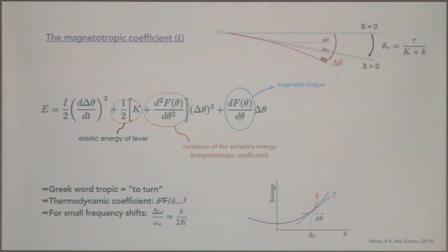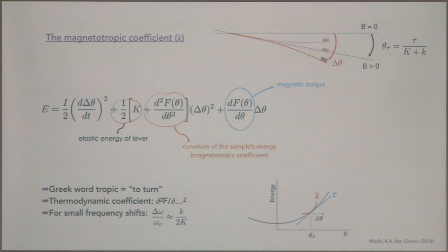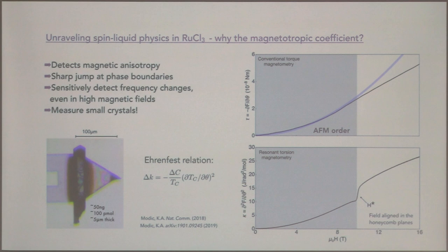People have done similar measurements before, but this was the first time we recognized that this is a thermodynamic coefficient. Second derivatives of the free energy with respect to different variables — like heat capacity, magnetic susceptibility, and elastic moduli — all show discontinuities whenever you cross continuous phase boundaries. That's the real reason I realized: if it's a second derivative of the free energy, let's measure it across an AFM phase boundary. And that's how we got into measuring ruthenium trichloride.